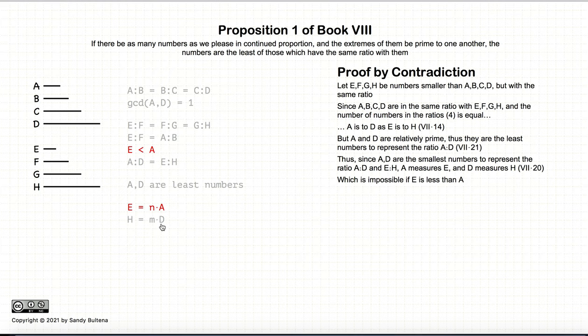And having followed this logic through, we have now come to a logical inconsistency. We have stated that E is less than A as part of our original idea, and we also have that E is measured by A. And these two statements cannot both be true, and hence we have come up to a contradiction. And thus our original idea that there is a number E that's less than A such that E to F is F to G is G to H, and so on and so forth, this cannot be true because it leads to a logical inconsistency.